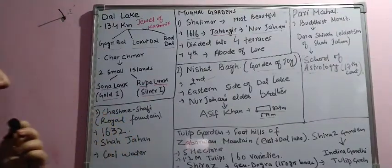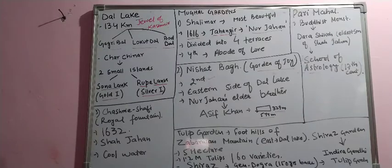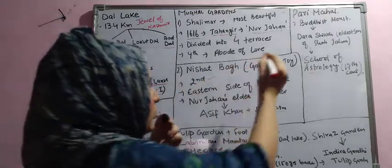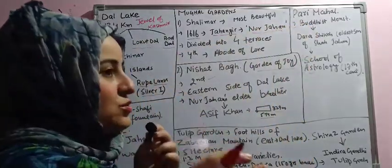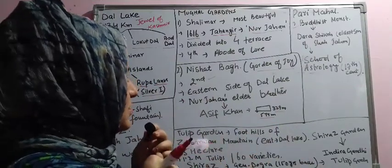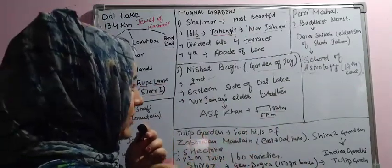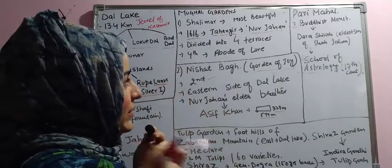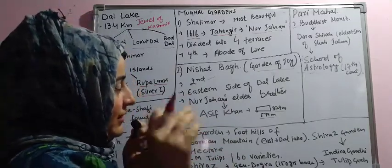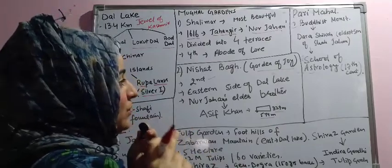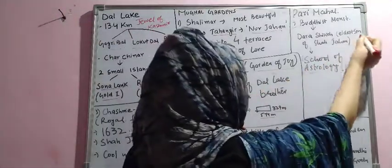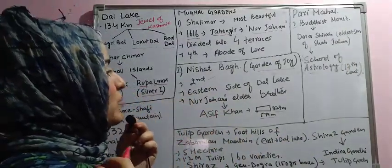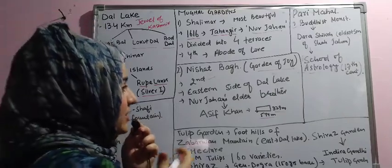Next is Pari Mahal. Pari Mahal was originally a Buddhist Monastery. It was converted into a school of astrology in the 17th century. It was made by Dara Shikoh, the eldest son of Shah Jahan. There are many details about who made it and when.